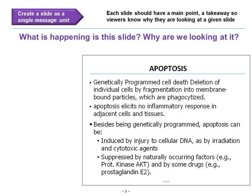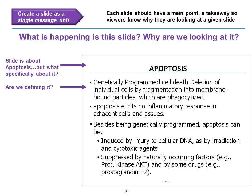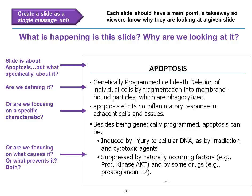First, create a slide as a single message unit. Let's take a look at this slide — what's happening here, why are we looking at it? This slide is about apoptosis, but what specifically? The first bullet point defines it as genetically programmed cell death of individual cells by fragmentation into membrane-bound particles. The second bullet point mentions it elicits no inflammatory response in adjacent cells. Other bullets address what causes it or suppresses it. As you can see, we are missing topic focus here.